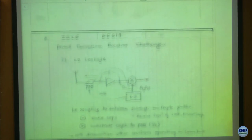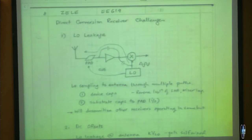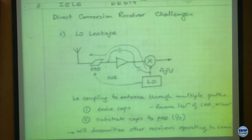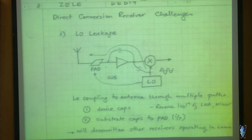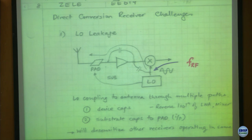This is all we have done before - I think this is where we kind of stopped because we ran out of time. One of the issues with direct conversion is the LO frequency. The LO frequency here for direct conversion is equal to FRF - same as our incoming RF frequency.